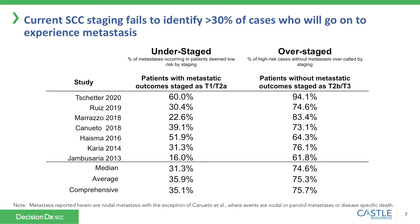Shown here is this misclassification from seven leading studies in our field, including those who developed the staging systems. These studies demonstrate the rate of missed metastases and the rate of patients who are called high risk but do not go on to metastasize — the left and right columns respectively. These are based on BWH staging, but similar rates are demonstrated with AJCC staging.